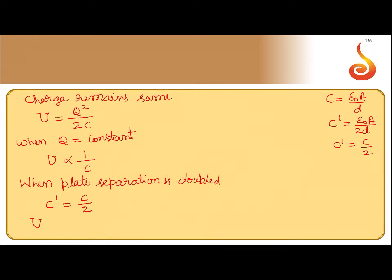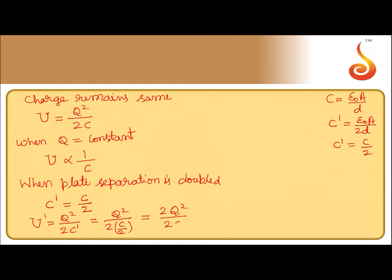The new potential energy stored is U' = q²/2C' = q²/(2 × C/2) = 2q²/2C. Since q²/2C equals u, this simplifies to 2u.